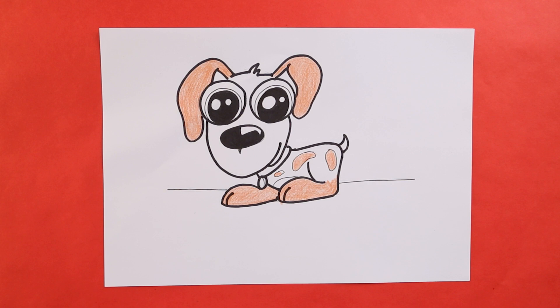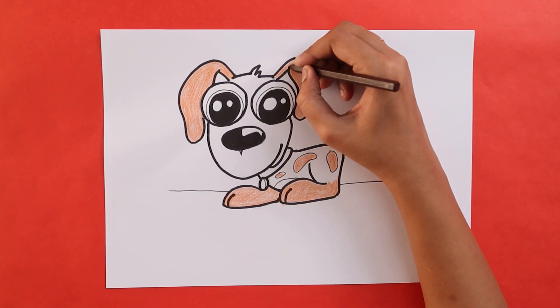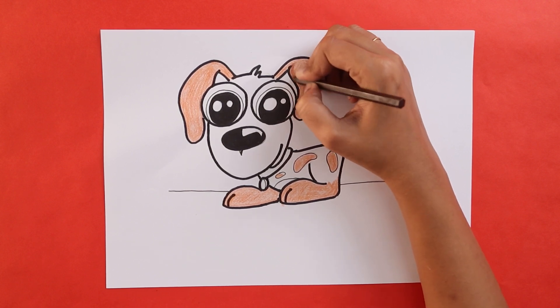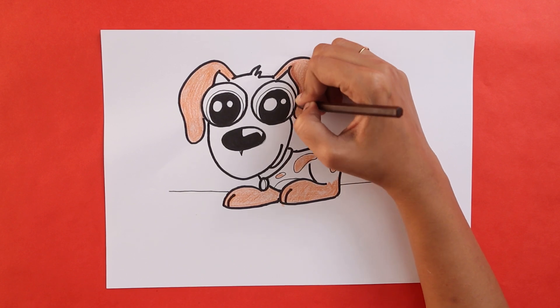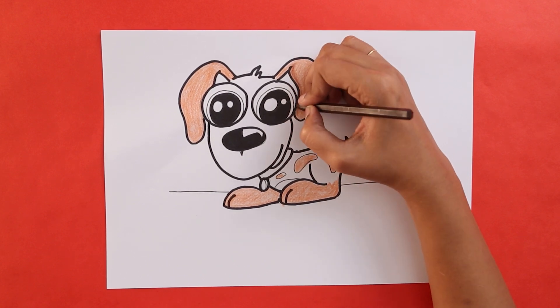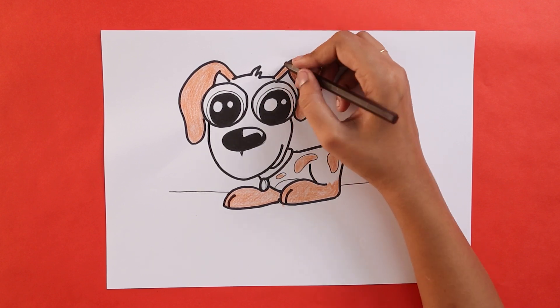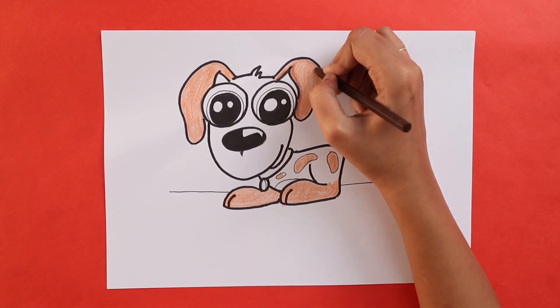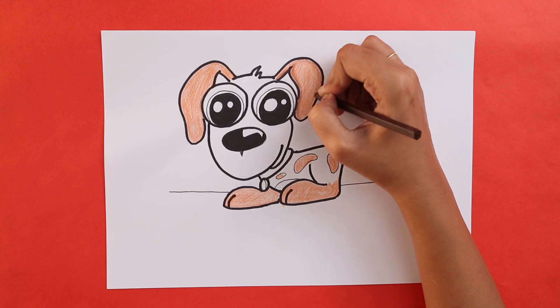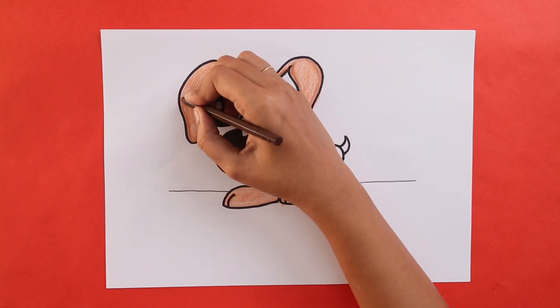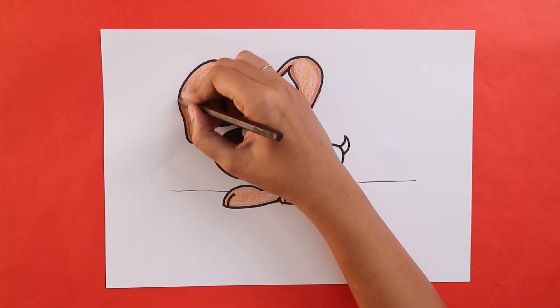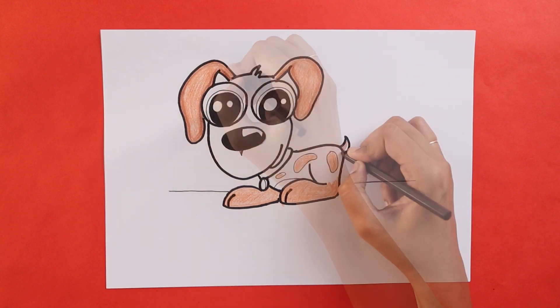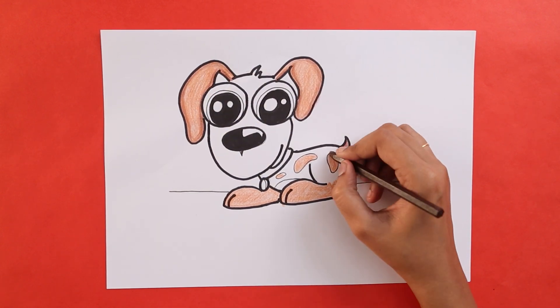Back to the coloring. Once we are done using the color brown, we are going to take a darker brown and outline the ears. We can just shade the edges of the ears. We can also do the same for the tail and the spots on the body.